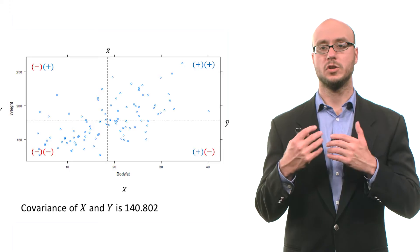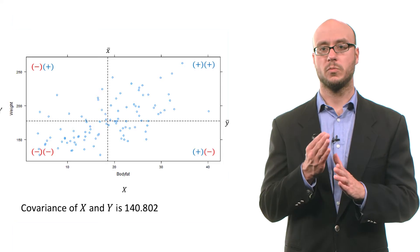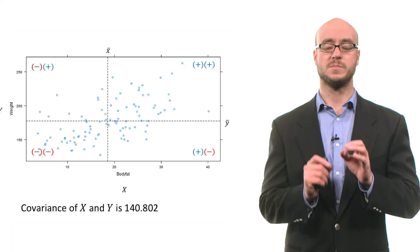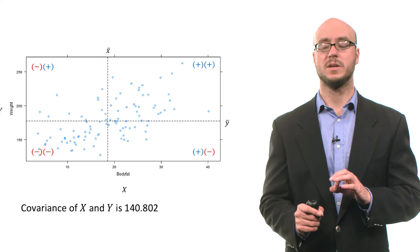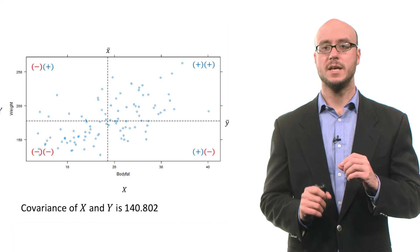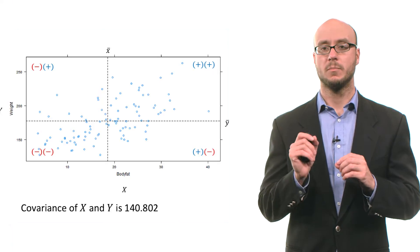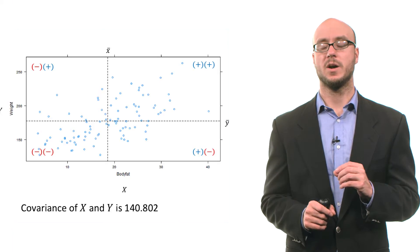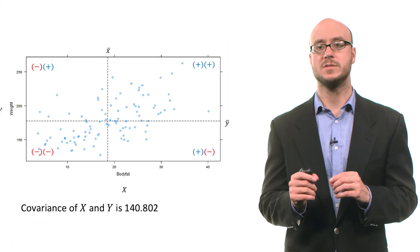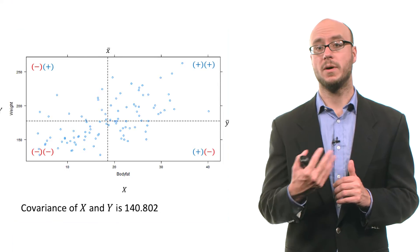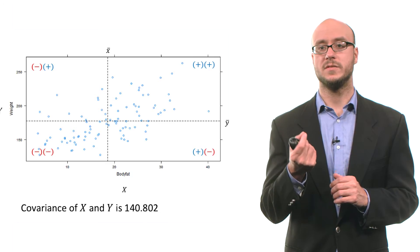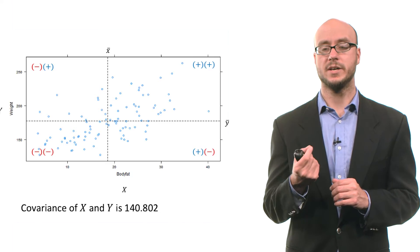Substantively, you can look at the scatter plot, and by dividing the scatter plot into four quadrants with respect to the mean of x and mean of y, we can see that in general we have more data points in those quadrants that have positive cross products. The upper right-hand quadrant consists of those values that are above the mean of y and above the mean of x, and you multiply those deviations together and you get positive values.